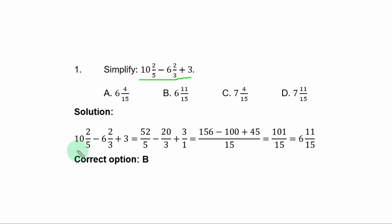This is the given problem. You simply convert the mixed fractions to improper fractions. If you convert this, you have 52 over 5. That is 5 times 10, 50 plus 2, 52 over 5. If you convert this, you have minus 20 over 3. You can write 3 as 3 over 1 in this form. The LCM of 5, 3 and 1 is 15.